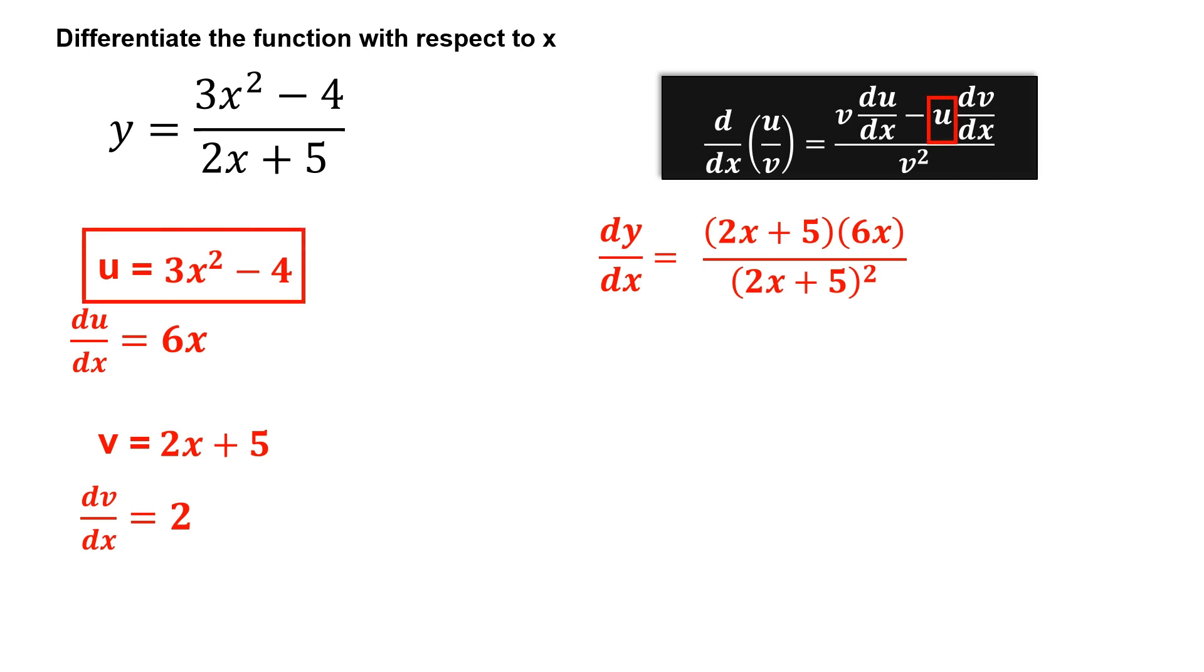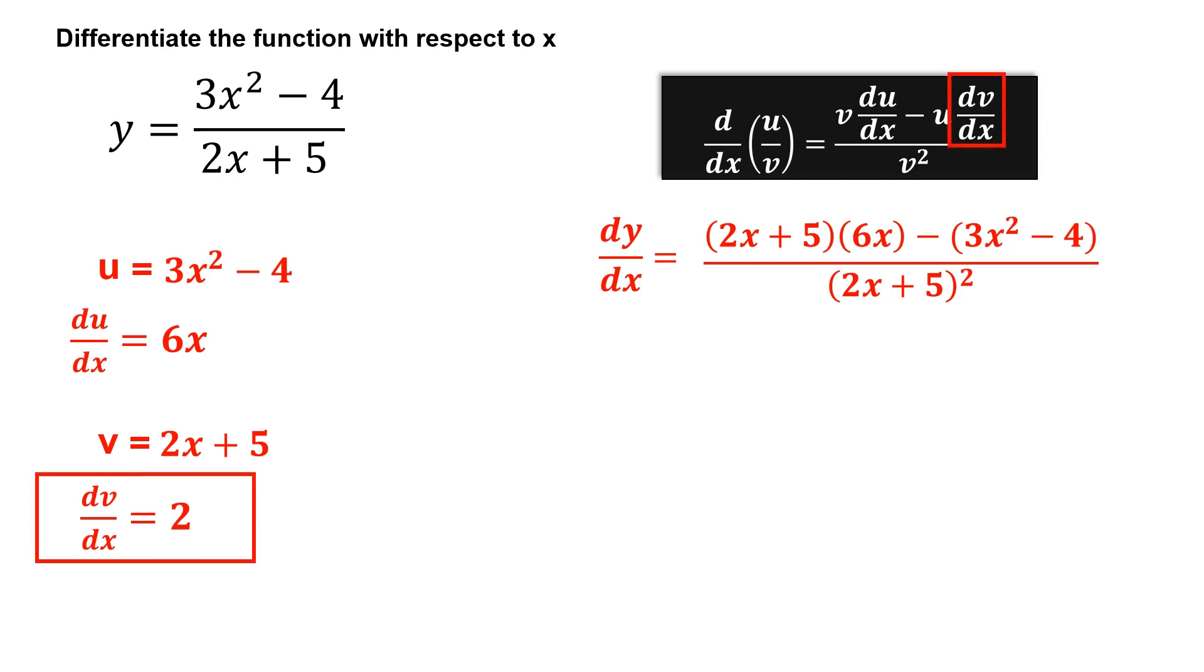For the variable u, we have 3x squared minus 4. And lastly for the derivative of v, we have 2.